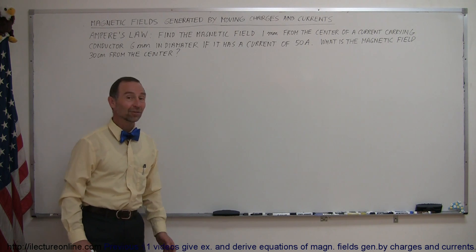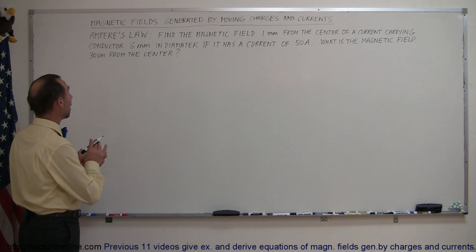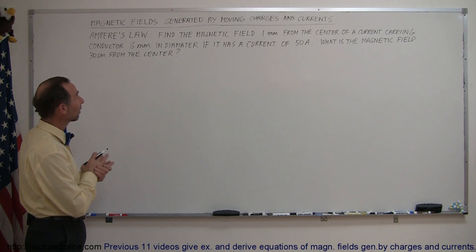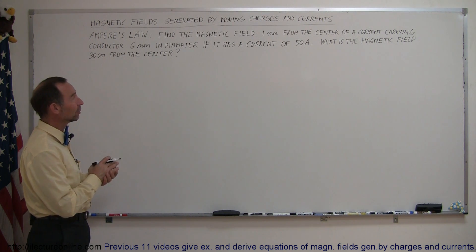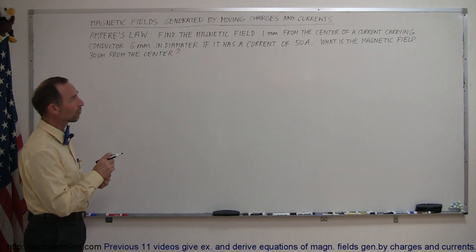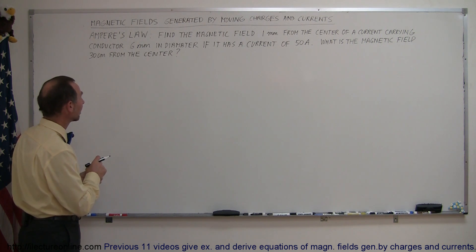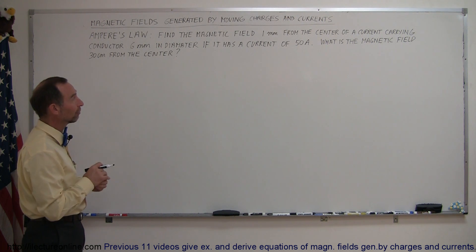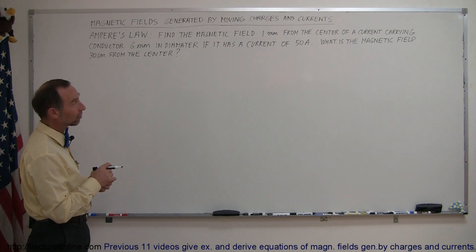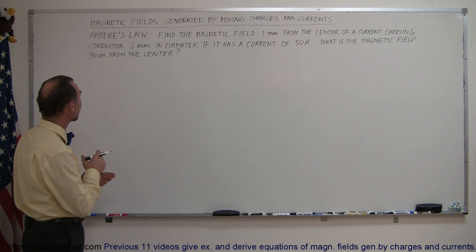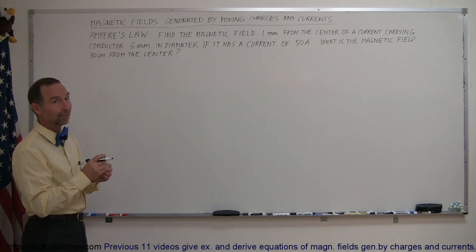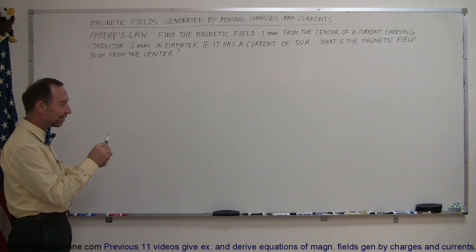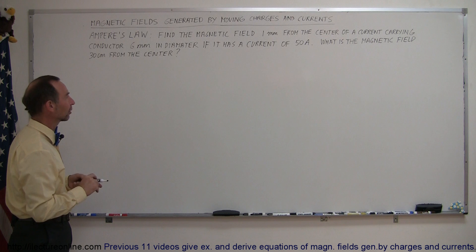Welcome to Electron Online. Here's an example of how to use Ampere's law on a problem. Find the magnetic field one millimeter from the center of a current-carrying conductor that is six millimeters in diameter — so you're right inside the conductor — if it has a current of 50 amps. Then it asks: what is the magnetic field 30 centimeters from the center? That means you're outside the conductor. So what is the magnetic field inside a conductor and what is the magnetic field outside a conductor?